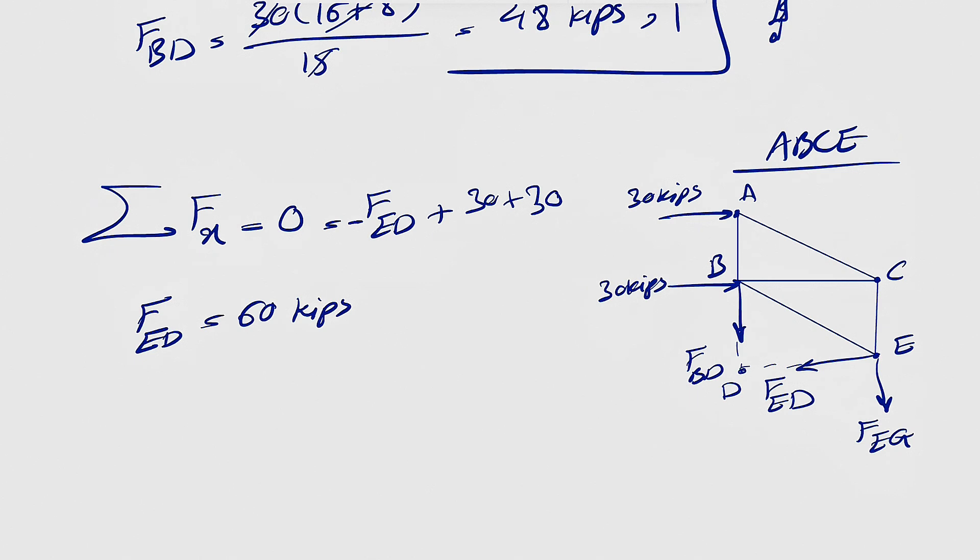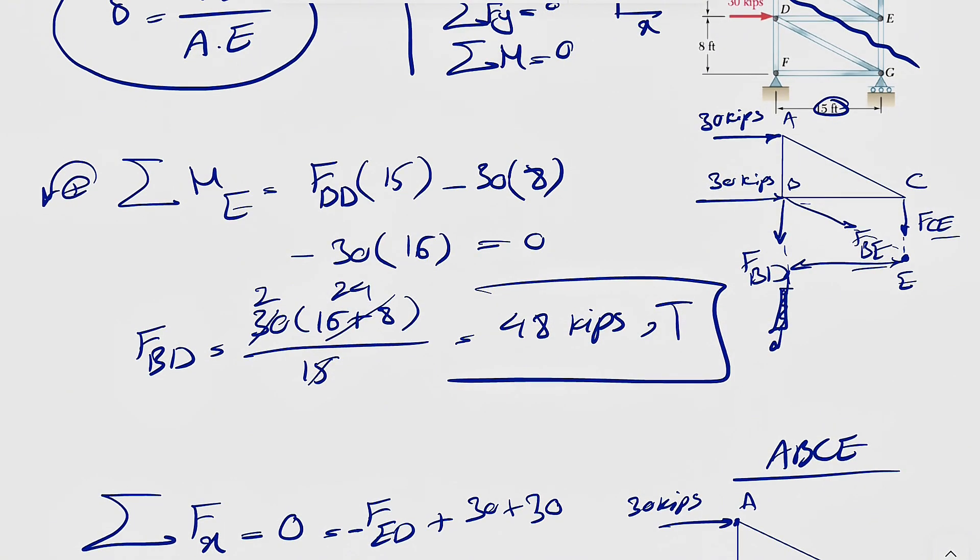And that shows that our FED in here is actually 60 kips. And again, we didn't get any negative sign. That shows that's the correct direction. So member ED is in here. Based on Newton's law, we're going to have a force in opposite direction. So this one's also in tension. And when the member is in tension, that means we're going to have a positive elongation because it will be elongated. So the rest of it is pretty easy. You just have to put the numbers for each of them to find the deformation.